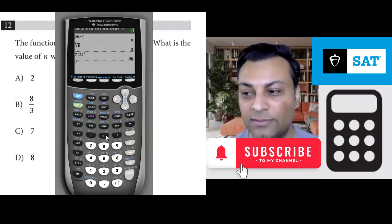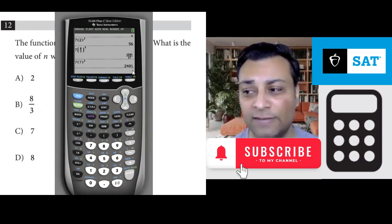Let's try 7 × (8/3)³. It's not 56. Let's try 7 × 7³, which is option C. That's more than 2,000 and that's not 56.